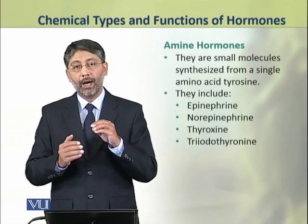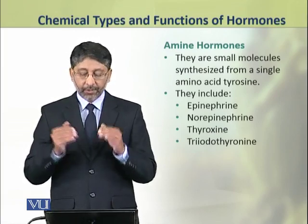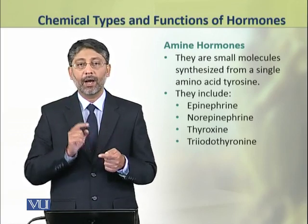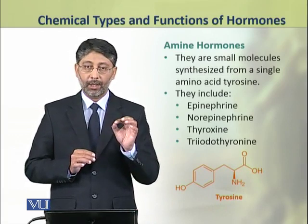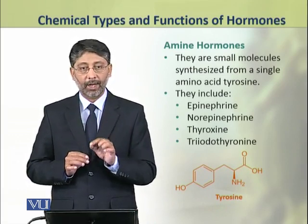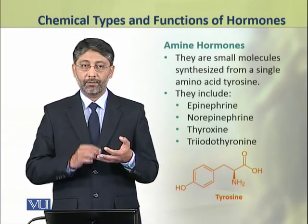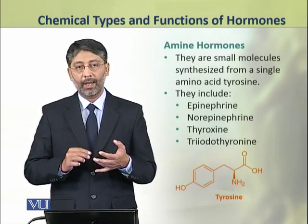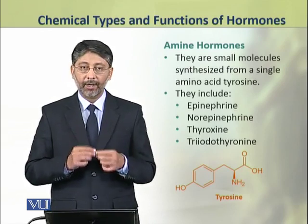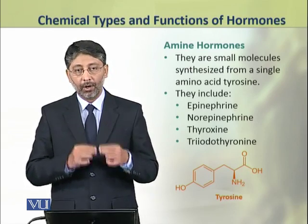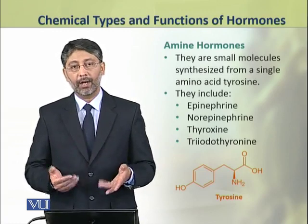Amine hormones are small molecules which are synthesized from a single amino acid, tyrosine. The hormones derived from tyrosine include epinephrine, norepinephrine, thyroxine, and triiodothyronine. Simply, we can say that the thyroid gland and adrenal gland — specifically the adrenal medulla — produce amine hormones.